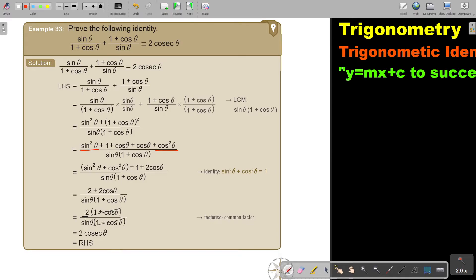Now what do I have? I take 2 out as a common factor and then I divide with this and I'm ending up with 2 over sin theta. And if I bring that sin theta up, what is the reciprocal? Cosec theta. And then the left hand side is equal to the right hand side.